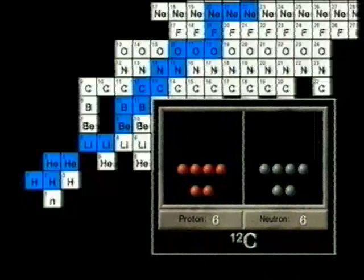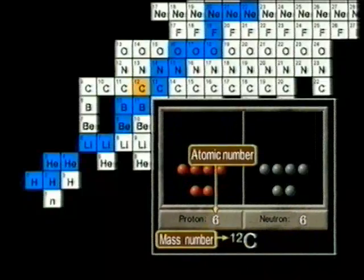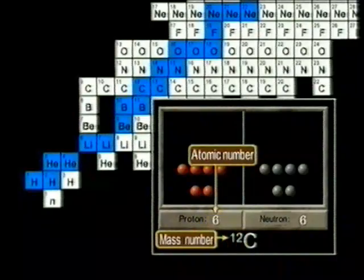Each isotope also has a mass number, the total number of protons and neutrons, and is named according to both its element name and mass number, for example, carbon-12.